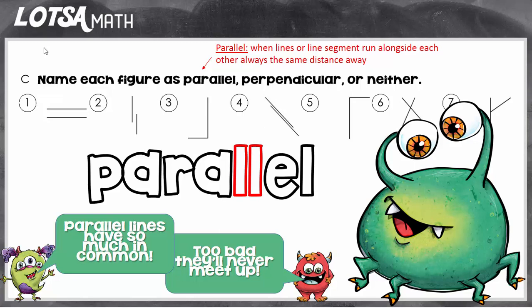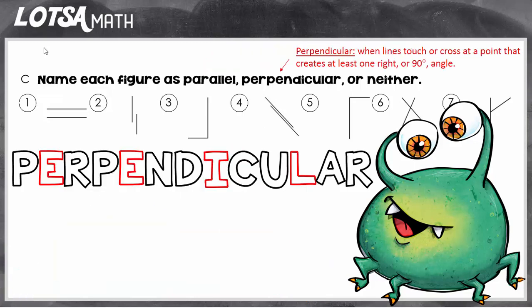Another important geometric figure are perpendicular lines. Perpendicular lines do meet up. In fact, perpendicular lines have to either touch or cross another line or line segment. But for them to be perpendicular, the lines or line segments have to cross or touch in a special way that would create a right angle. A right angle is a perfect angle that looks like the corner of your paper or the corner of a room. So when lines or line segments touch and create at least one right angle, or cross and create at least two right angles, you know that those lines are perpendicular.